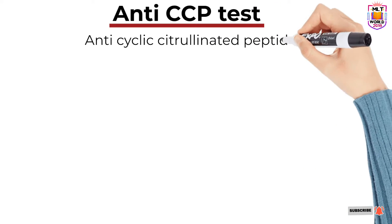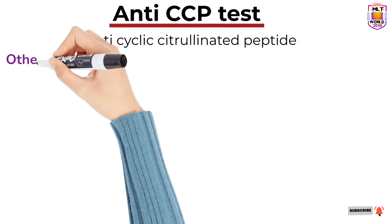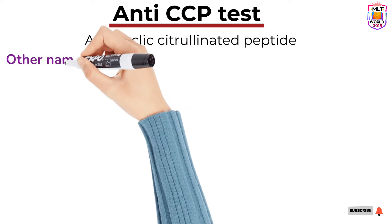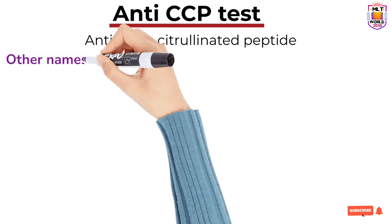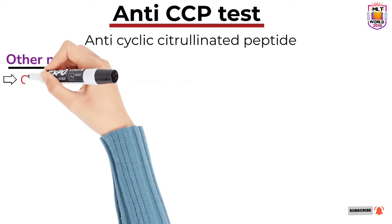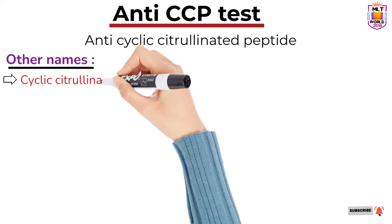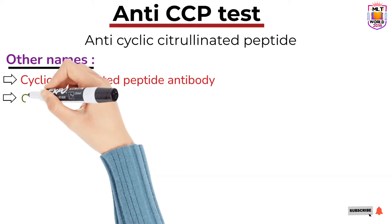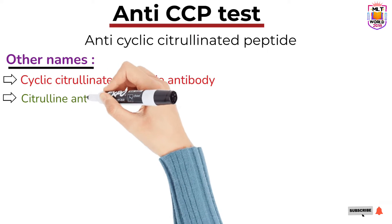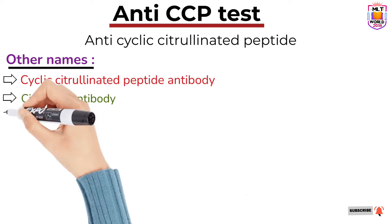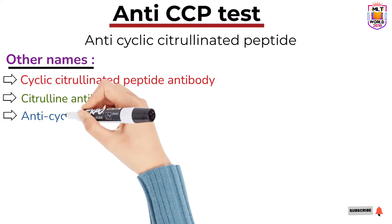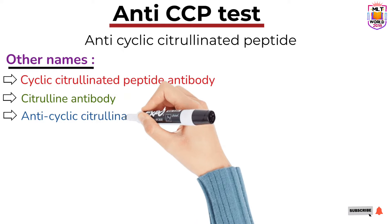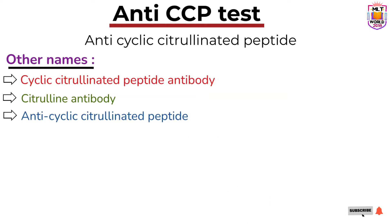This test is also known by some other names: Cyclic Citrullinated Peptide Antibody Test, Citrulline Antibody Test, and Anticyclic Citrullinated Peptide Test. So there are different names for the same test.